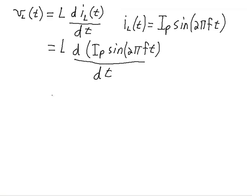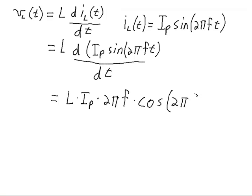Using some basic calculus, we can actually figure out what this is. IP is going to be a constant, and when we do the derivative of sine of 2πft with respect to time, we're going to bring the 2πf out front. So L times IP times 2πf times the derivative of sine then is a cosine. So still a sinusoidal wave, just with a different offset, a different phase shift.